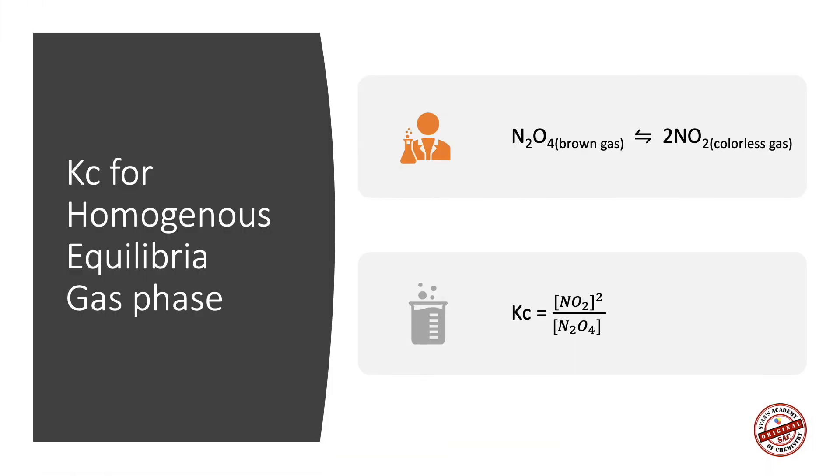In the second example for a gas phase reaction, KC equals concentration of NO₂ raised to 2 divided by concentration of N₂O₄ raised to 1. Both reactants and products are included in the equilibrium expression because they are both gases. You can also use partial pressures to determine what we call Kp for this reaction.